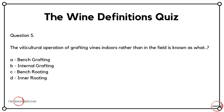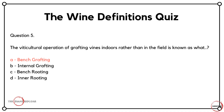Question five is all about activities in the vineyard. The viticultural operation of grafting vines indoors rather than in a field is known as what? Is it A, bench grafting? Is it B, internal grafting? Is it C, bench rooting? Or is it D, inner rooting? Why might we do this process indoors? Typically it's done in greenhouses where you can get a slightly increased temperature, as this exercise is normally taking place between winter and spring. The correct answer here is A — it's bench grafting.